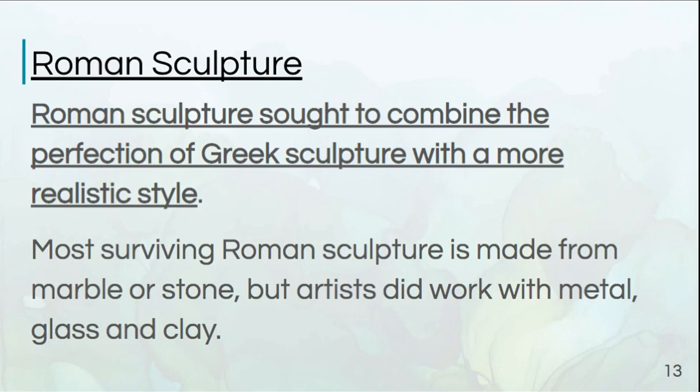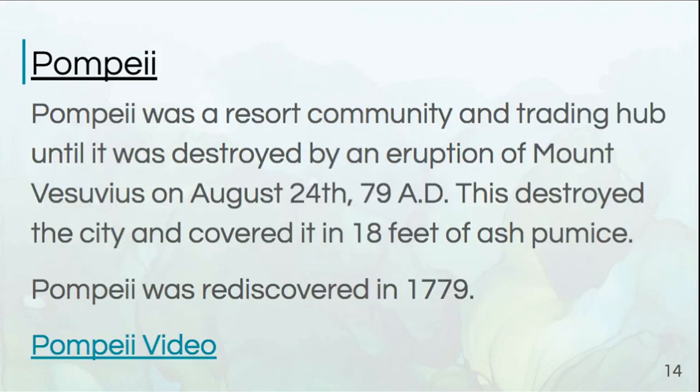Let's talk briefly about Roman sculpture. They wanted to combine that perfect Greek sculpture — remember how beautiful those bodies looked — with a more realistic style. Most surviving Roman sculpture is made from marble or stone, but there are some artists who did work with metal, glass, and clay.